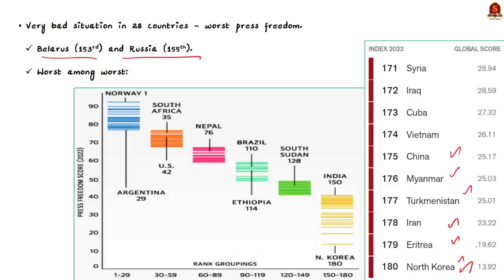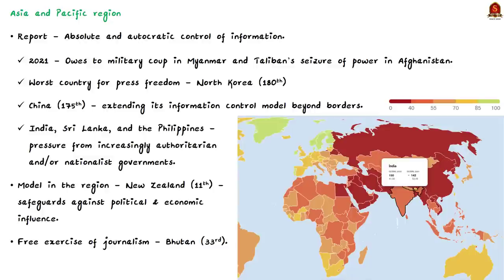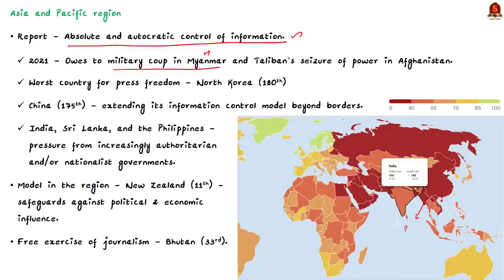Looking at the Asia and Pacific region, it has been termed as under absolute and autocratic control of information. The region's press freedom has deteriorated due to two main incidents. First, the military coup in Myanmar in 2021 led to extremely harsh repression of journalists, making Myanmar one of the world's largest prisons for media professionals. Second, Afghanistan is at 156th position due to Taliban's seizure of power, which further worsened conditions for reporters and news organizations.